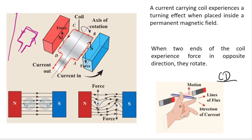Stretch your left hand with three fingers perpendicular to each other. Let your first finger denote the lines of flux, your second finger denotes the direction of current — direction of current is outwards — and your thumb indicates the direction of motion. So C, D is in the coil segment; the force is in the upward direction.